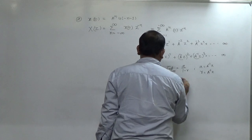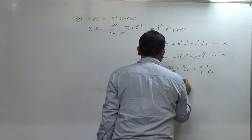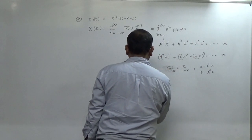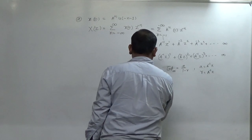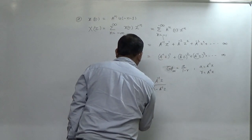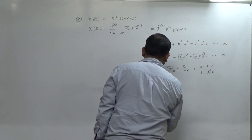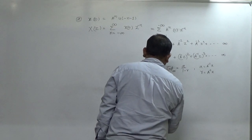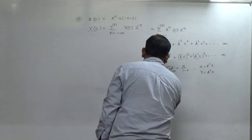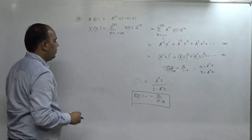Using this result, X(z) finally simplifies to: the Z-transform of x(n) = a^n · u(-n-1) equals -z/(z - a). So the final answer is X(z) = -z/(z - a).